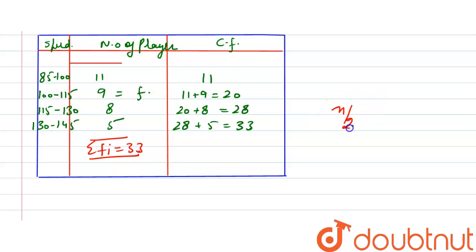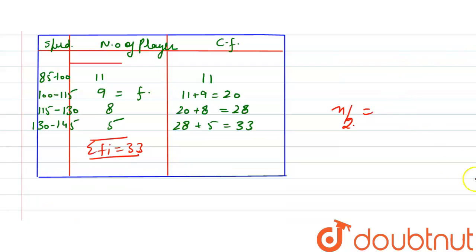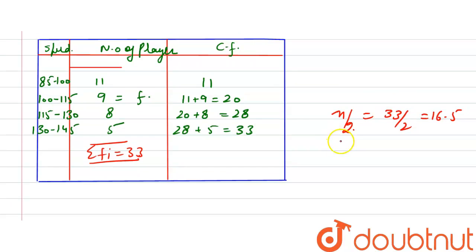Since the total number of players is 33, we calculate n by 2, which is 33 divided by 2, equal to 16.5. This value determines the median class. The median frequency f is equal to 9.